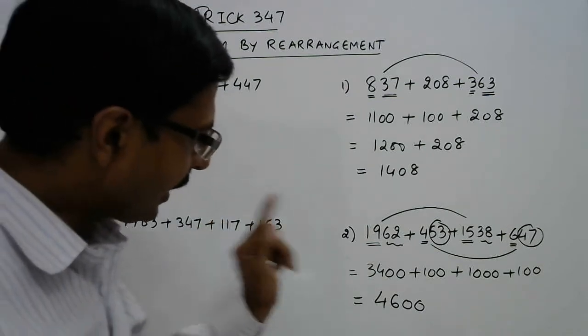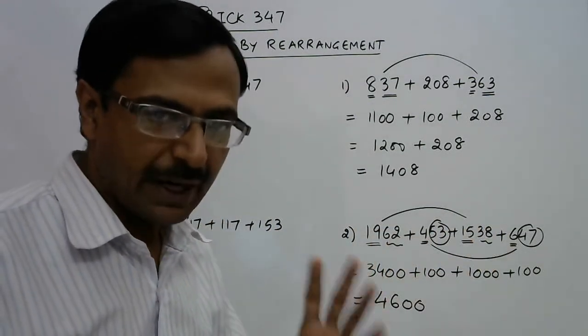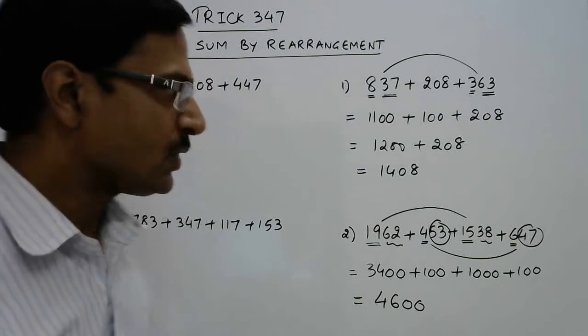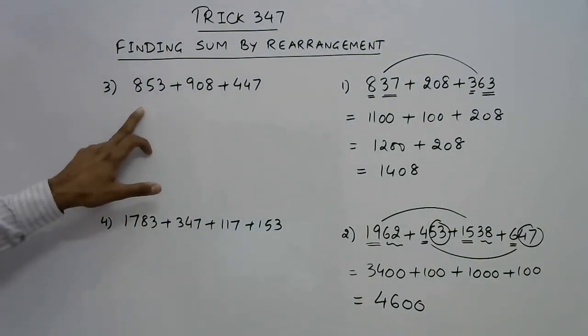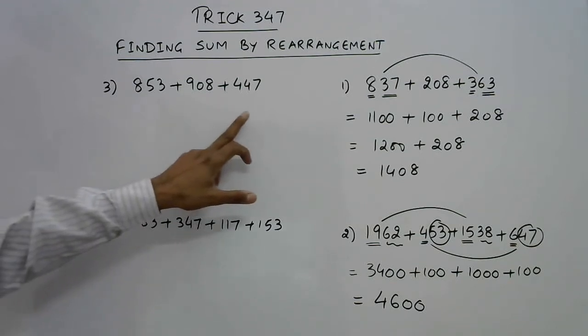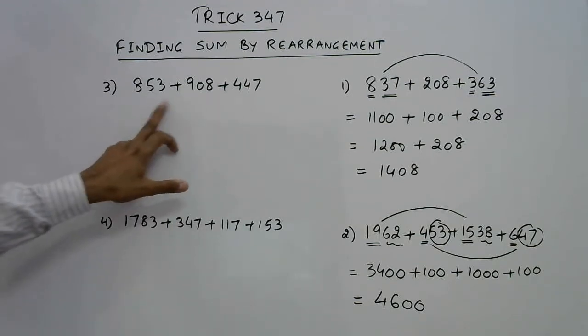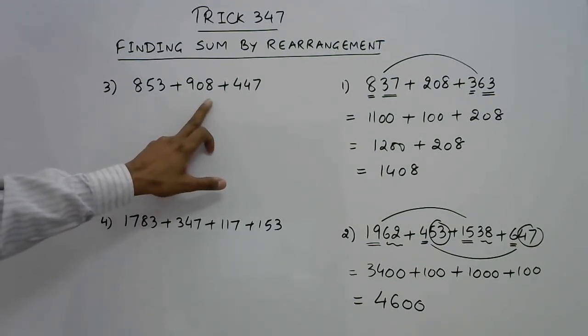Another example: see 853, 908, and 447. 3 plus 8 is 11, so you get 1 in the units place, so we will not add these two. 8 plus 7 is 15, giving 5 in the units place, so we're not adding that.